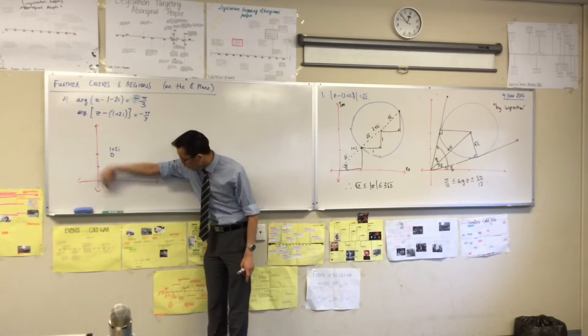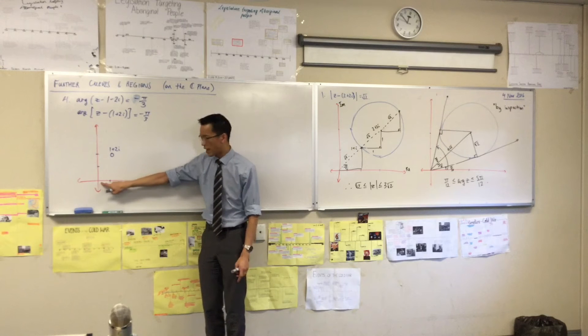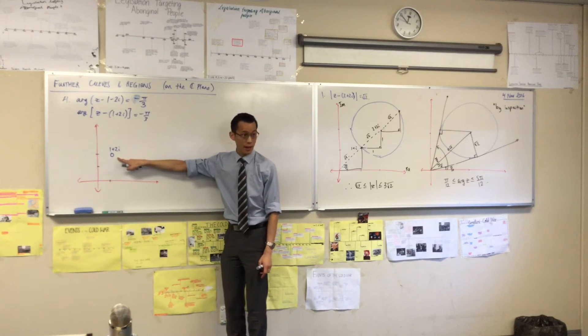So usually I'd say you start from there, and off you go, there's your angle. But I'm not starting from here anymore, am I? I'm starting from this guy. Does that make sense?